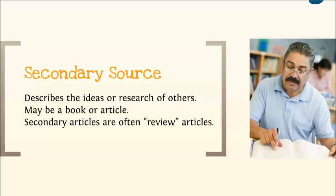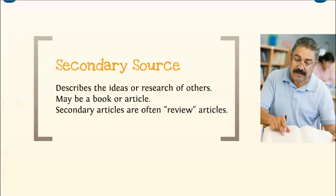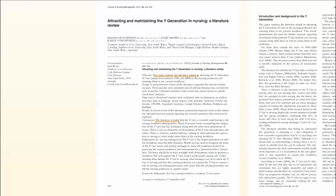In a secondary source, the authors describe or analyze someone else's ideas or research. This can take the form of either a book or an article. If a peer-reviewed article is the secondary source, you'll typically see the word "review" somewhere in the article title or abstract. The abstract of a secondary article will describe the ideas of others or indicate in some way that it's surveying current events or literature.